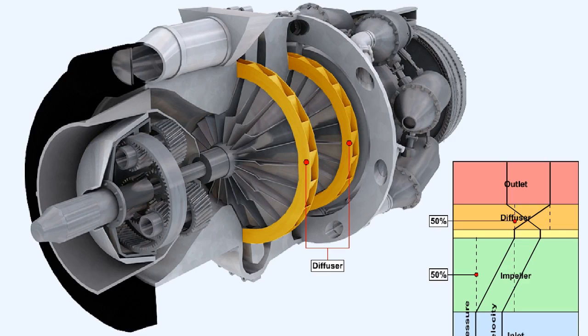As you can see from the graph, in practice approximately 50% of the pressure rise across the compressor occurs in the impeller and the other 50% in the diffuser section.